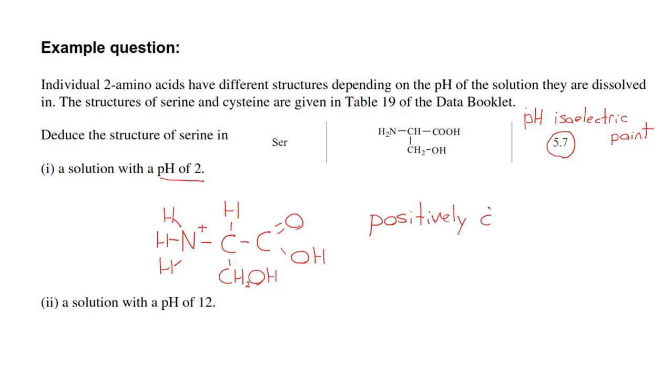The second part of the question asks for the structure with a pH of 12. It's above the isoelectric point so it's going to have a negative charge.